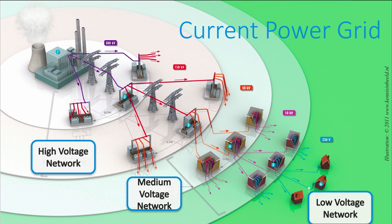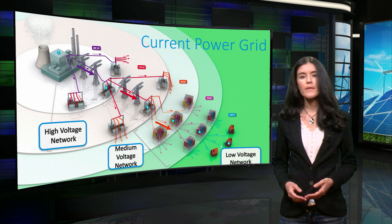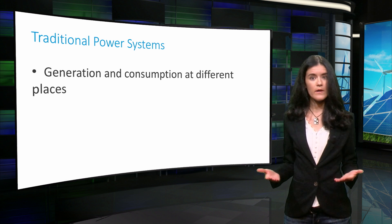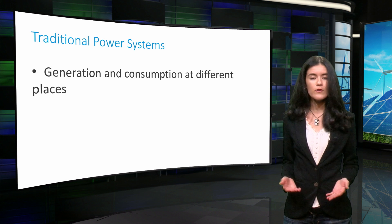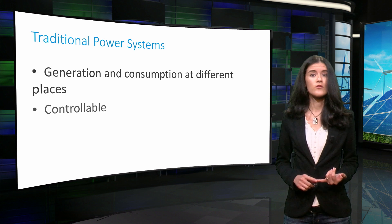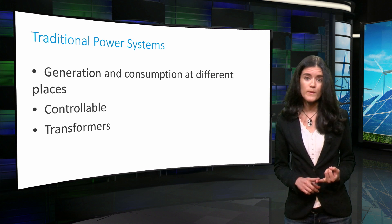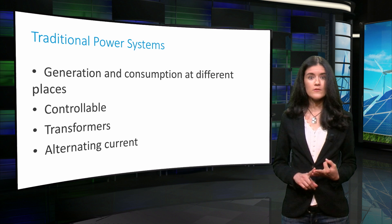Let's have a closer look at the diagram now. Notice the direction of the power, denoted by the arrows. As you can see, there is a unidirectional power flow, which means that generation occurs only at the generation side of the power system and consumption only at the distribution side. This is one important characteristic of traditional power systems. For example, most power plants are controllable and large. Voltage is increased or decreased by means of transformers. Large power plants operate on alternating current.